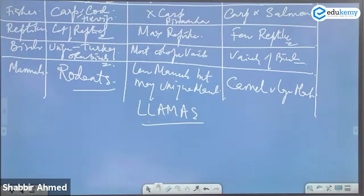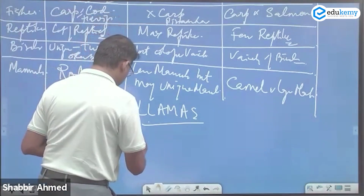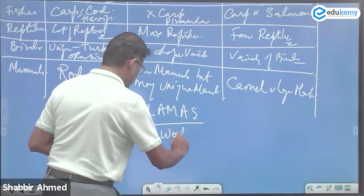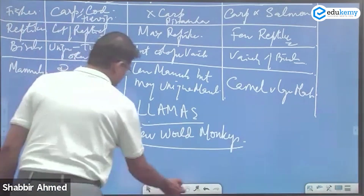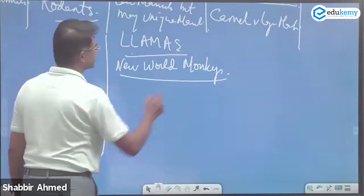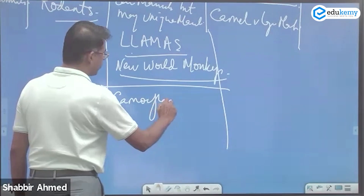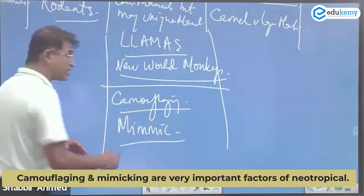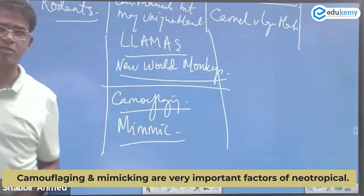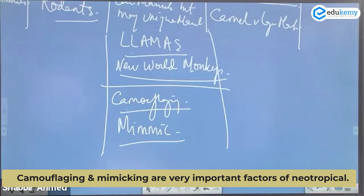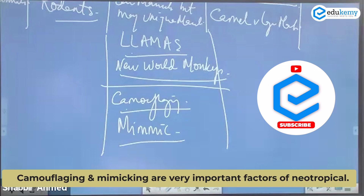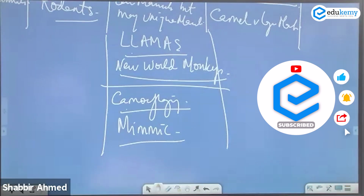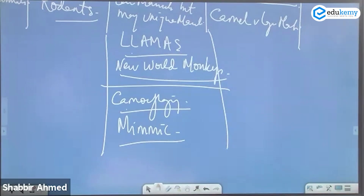Neotropical has fewer mammals but many unique ones — like llamas, which are like camels. It also has new world monkeys. An important feature of the neotropical region is camouflaging and mimicry — animals can mimic sounds and appearance. If the background is black they turn black, if green they turn green. This ability to camouflage is a very important feature of the neotropical realm.